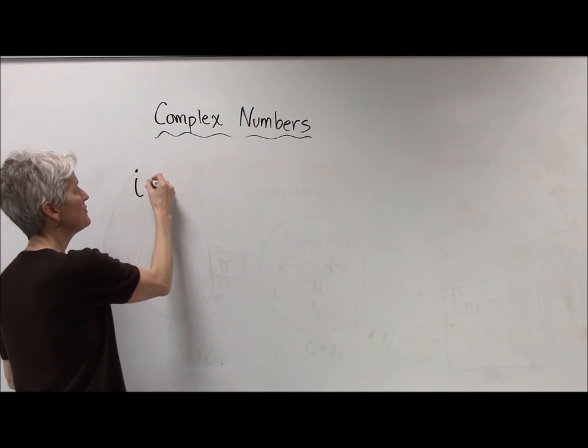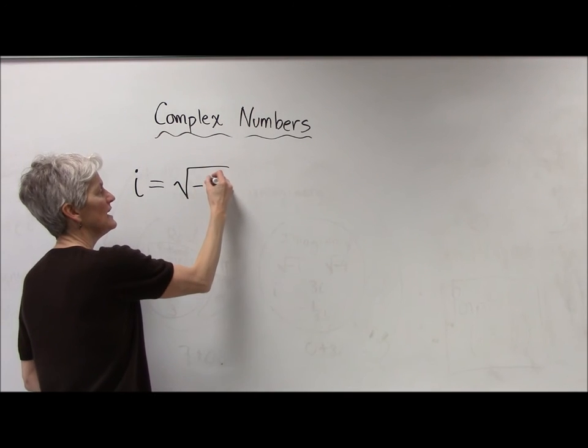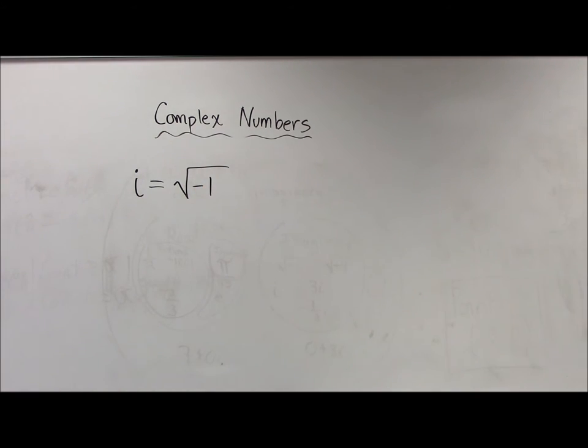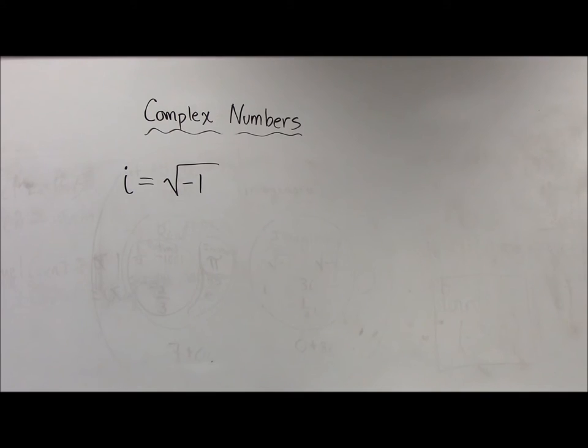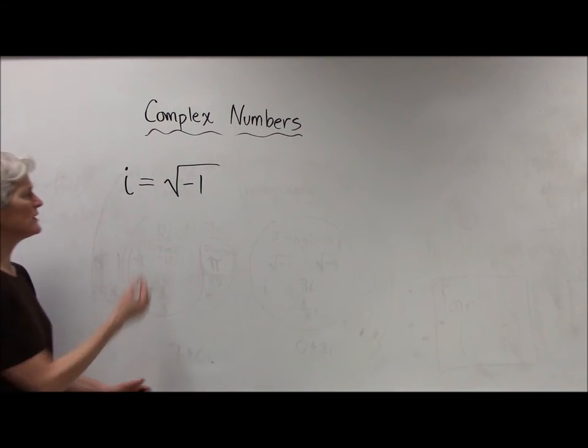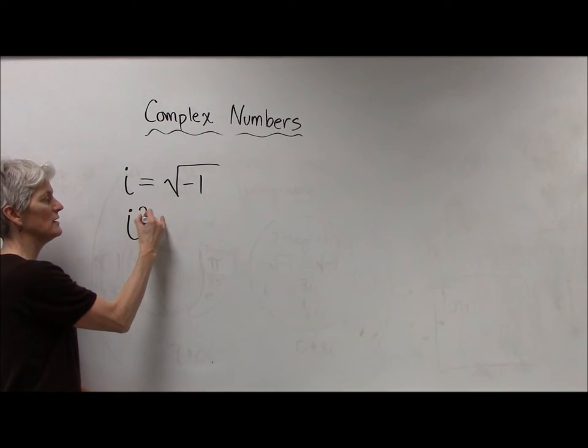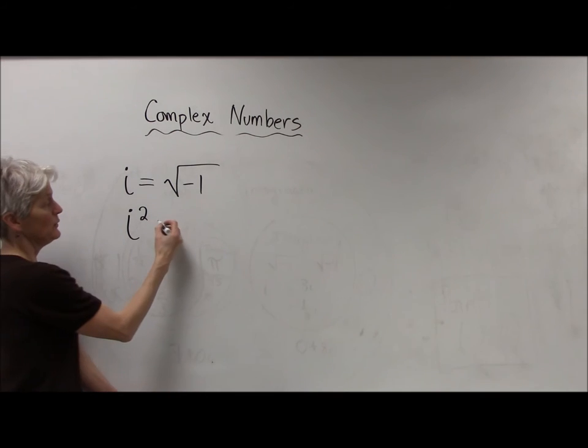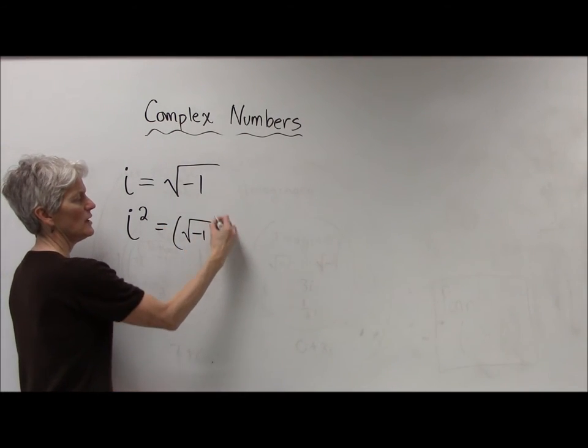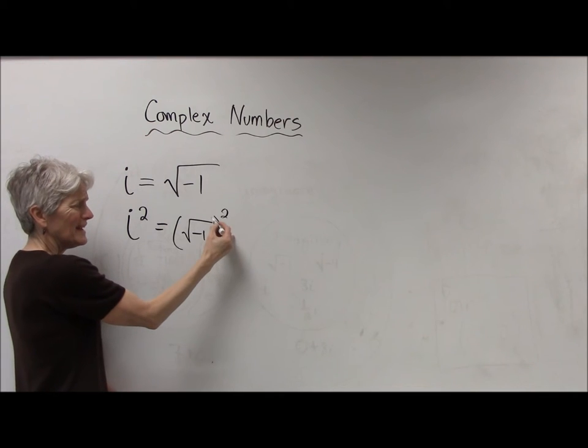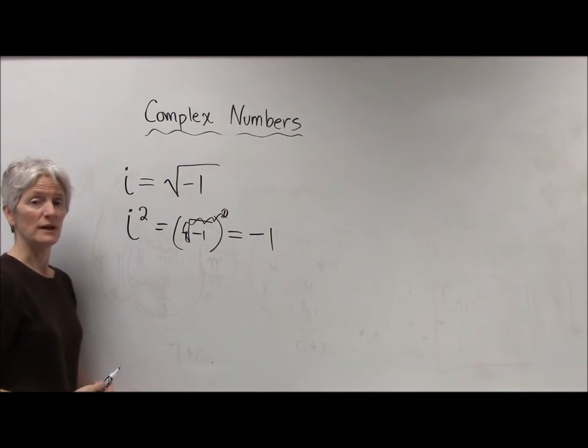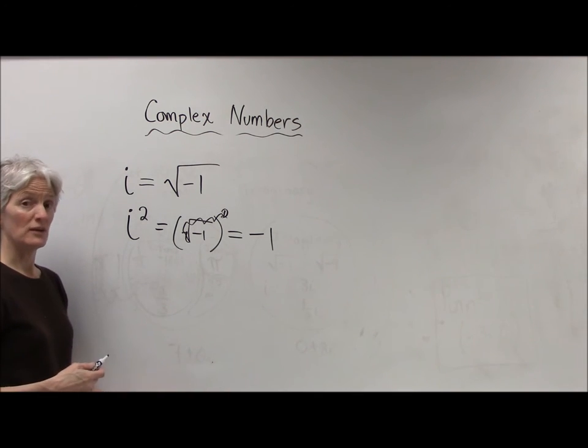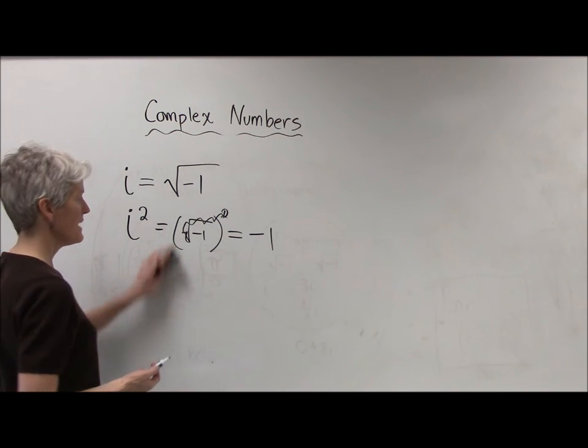i is defined to equal the square root of negative one. That has to be defined for us. That's a given. So now everything else comes from that. So what happens when I square i squared? Well, I'm going to square the square root of negative one. That's square and that square, and I equal negative one. So yeah, i squared equals negative one. That makes sense.